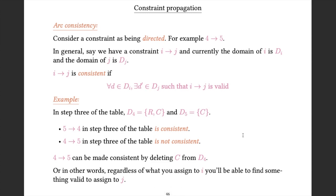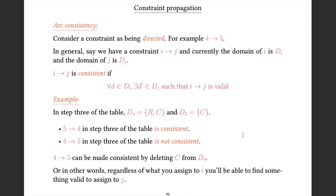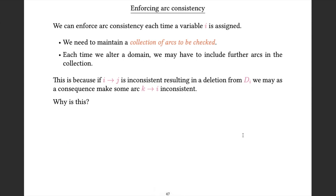The underlying idea is that at each stage in the search, we should impose consistency on all the remaining unassigned variables, because that will allow us to avoid getting to a situation where one or more currently unassigned variables doesn't have any consistent possibilities left. What we'll do is maintain a collection of arcs and try to make sure that all our arcs are consistent — by doing deletions in such a way that we make all arcs consistent.